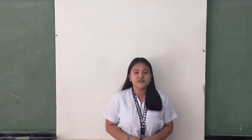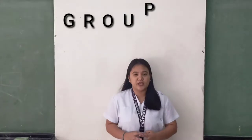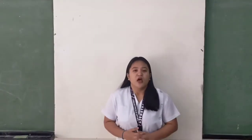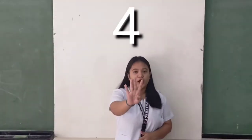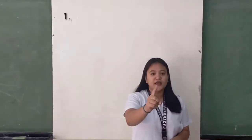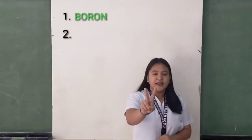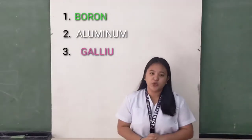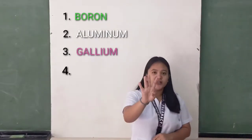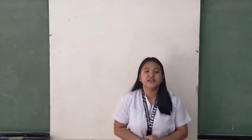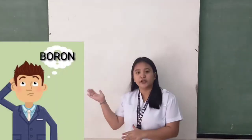Good day everyone. Today we are here to discuss Group 3A, also called the Boron family. There are 4 elements in this family: number 1 is Boron, 2nd is Aluminum, 3rd is Gallium, and 4th is Thallium. But first, let us discuss what is Boron.